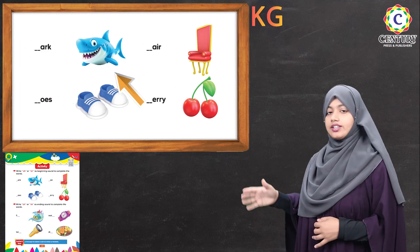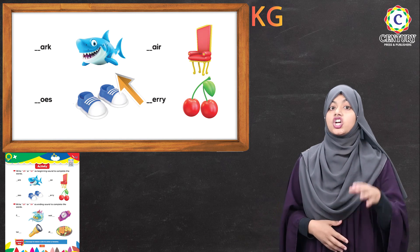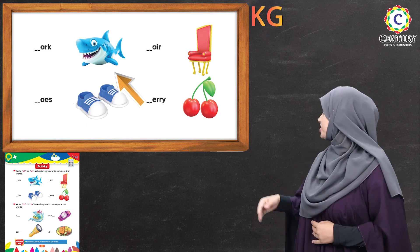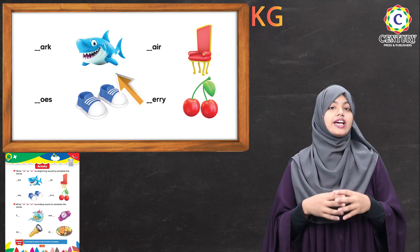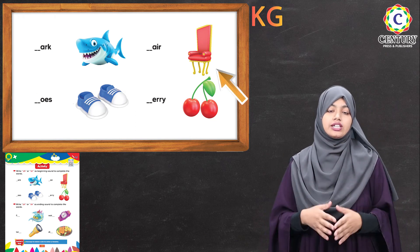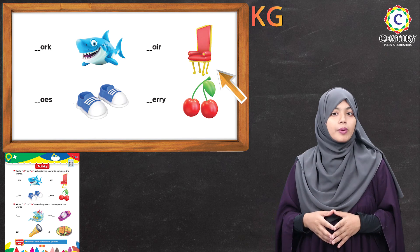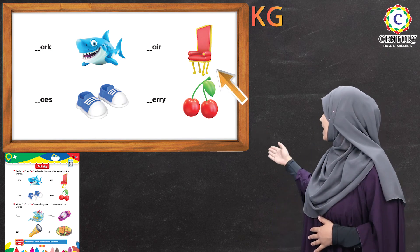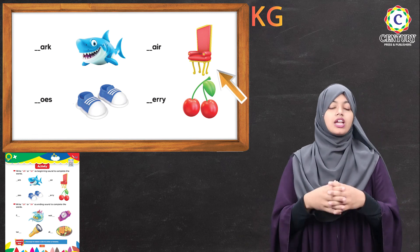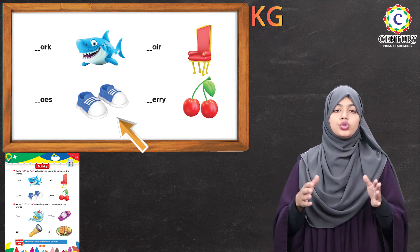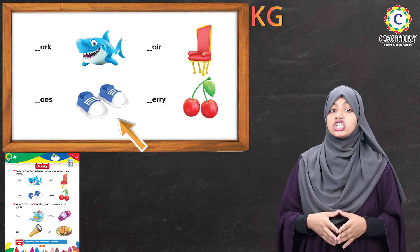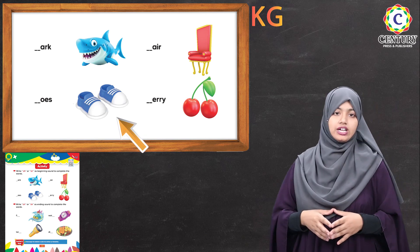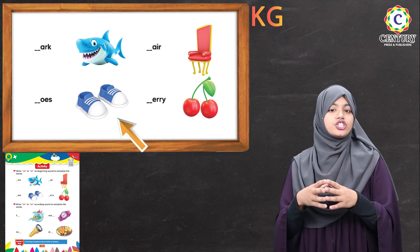First of all, it's 'shark.' The sound here is SH — sh, sh, sh. So it's 'shark.' The next one is 'chair.' The sound here is CH, meaning we use S and H for shark and C and H for chair.